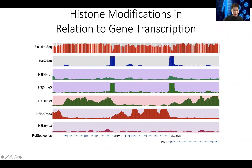K27 acetylation tells us which regions of the genome are really open and active. There are other marks — K4 mono and trimethylation — that also have signals across the genome, more focal on some of these active regions. Different histone modifications have a different genome-wide distribution.